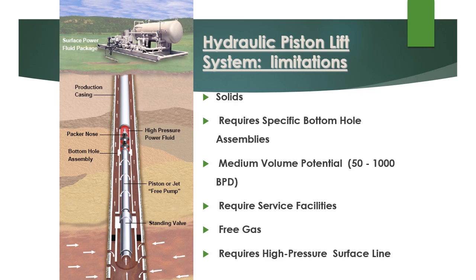Limitations of the hydraulic piston lift system: It is a positive displacement pump, so solids are a big limitation. Free gas is also a big limitation. It requires a special tubing assembly, same as the hydraulic jet lift system. Volume capacity is lower, which is also a limitation. Service facilities are required because there are moving parts so maintenance will be high. High pressure surface lines are required - here we have to pump hydraulic fluid at 150 to 160 kg per square centimeter - so high pressure surface injection lines are required.